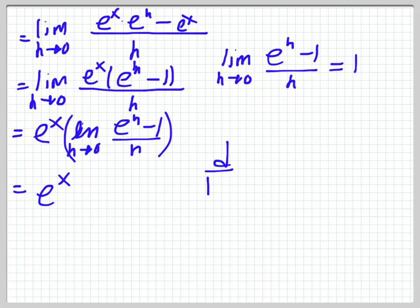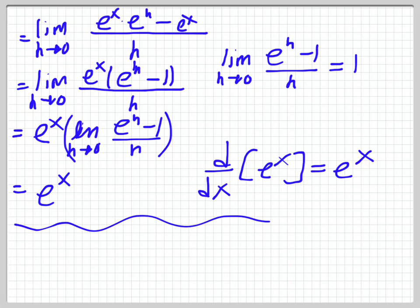So I just proved that d over dx of e to the x is equal to e to the x, using the limit definition. I hope this video helped. One of the most important things for calculus is to remember that you are responsible for knowing proofs. This is one of those proofs that gets asked a lot. If you're looking for the logarithmic differentiation version, I'll post a card at the top so you can click on it. I would recommend knowing both. Keep doing questions, and hopefully this helps, guys. Thanks for watching — see you in class.